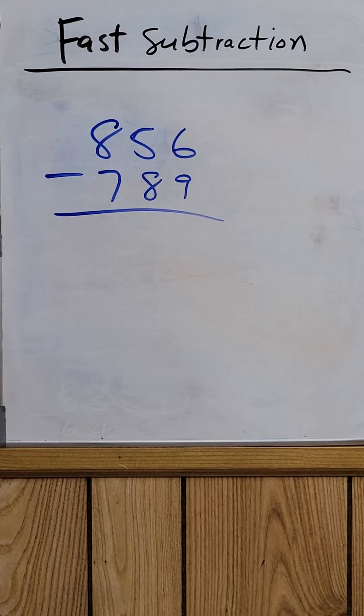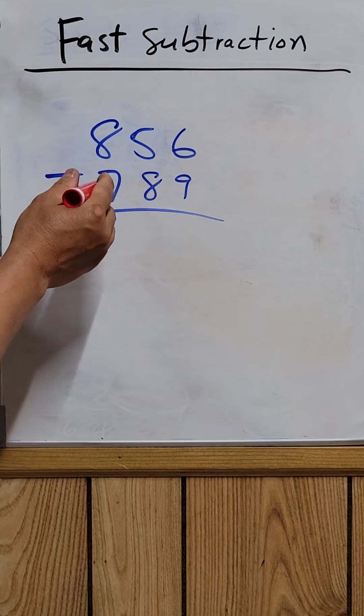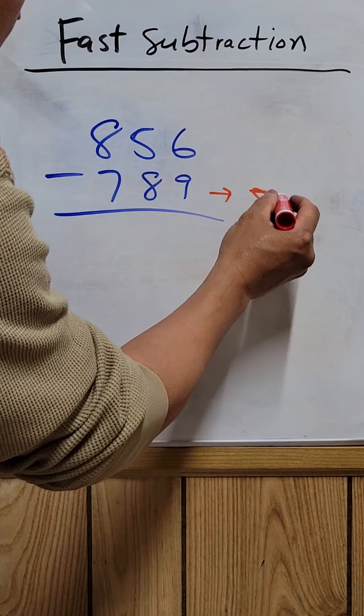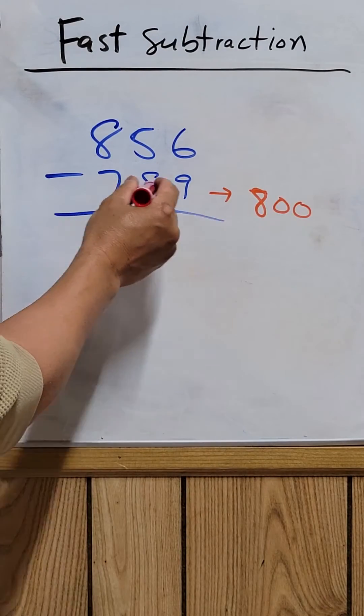All right, so look at the bottom number. You just round this one to 800. 789, just round to 800, and the top one just leave alone.